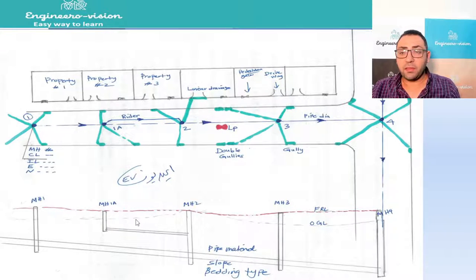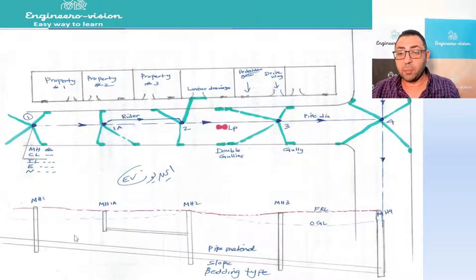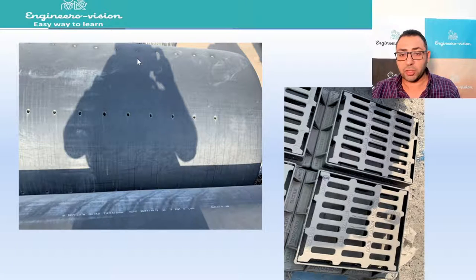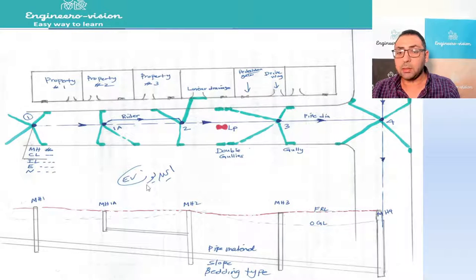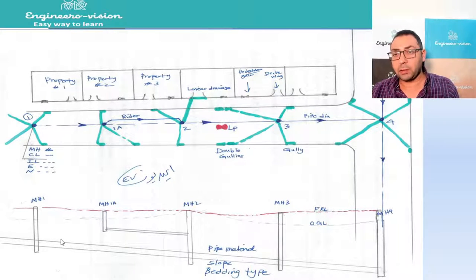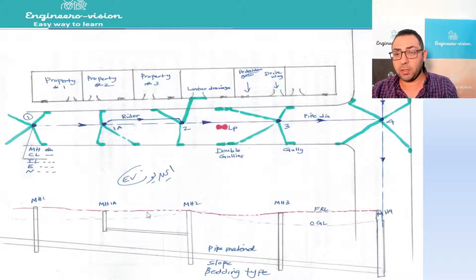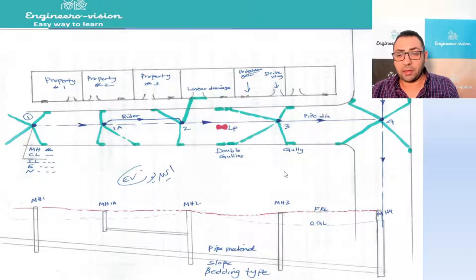The rider manhole, as I mentioned, sits above a deeper line. That deep line is perforated — as discussed — to collect groundwater. The rider manhole pipe above it does not need to be perforated because it handles surface water only. Groundwater pipes must be perforated, but if the system is working only for surface water, the pipe is solid. These are the distinctions I wanted to explain.